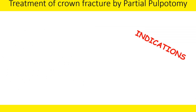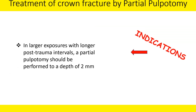The treatment of crown fracture by partial pulpotomy has indications of a larger pulp exposure with longer post-trauma intervals, meaning longer than 24 hours. Another condition is that the pulp should be free of inflammation before the injury, and after the injury the vascular supply to the pulp should not have been affected. Only under these conditions will partial pulpotomy be successful.